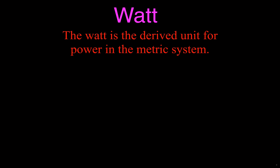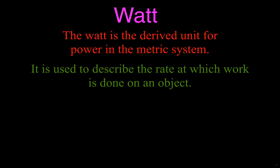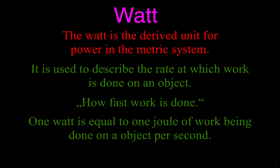The Watt is the derived unit for power in the metric system. We say derived unit because there are other units inside of it, like the Joule and the second. The Watt describes the rate at which work is done — when we talk about rate, we're talking about time, so how fast work is done. If you do the same amount of work as me but faster, you are more powerful. One Watt equals one Joule of work done on an object per one second.